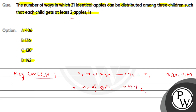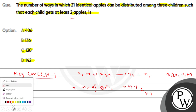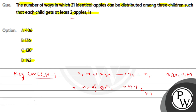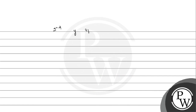Now let's set up the variables. Let the first child get x apples, the second child get y apples, and the third child get z apples.